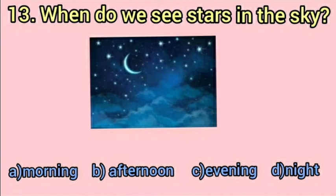Option A — Morning. Tell me, what do we see in the morning sky? Yes, we see the sun. So this option is incorrect according to the question. Let's see the next option. Option B — Afternoon. Do we see stars in the afternoon? No. Option C — Evening. Do we see stars in the evening sky? No.